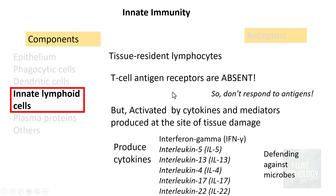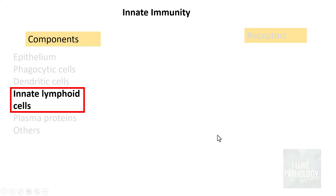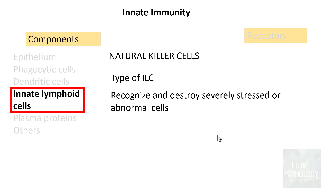An important ILC to know is the natural killer cell. Natural killer cells recognize and destroy severely stressed or abnormal cells — including virus-infected cells and tumor cells, which are recognized as abnormal. This is a first-line mechanism. Of course, tumors do develop ways to evade these cells, which has been discussed in detail in the tumor immunity session.